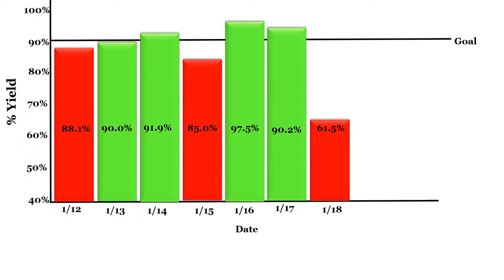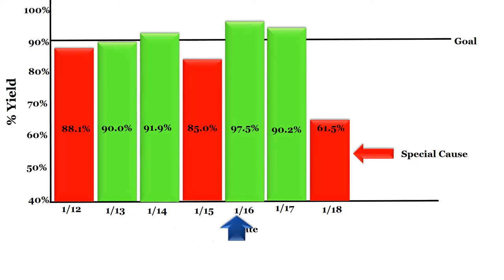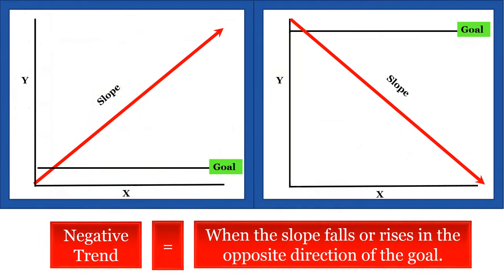In this KPI chart, we see a special cause at x equal to 61.5%, while the average of the surrounding data points equals 90.5%. This is clearly an outlier. Besides special cause, KPI charts may show negative and positive trends. A negative trend is one in which the slope rises or falls in the opposite direction of the KPI goal. Here we see two charts — one that has an ascending slope and the other with a descending slope. In both cases, these charts are displaying negative trends as the slope is falling or rising in opposition to the goal.